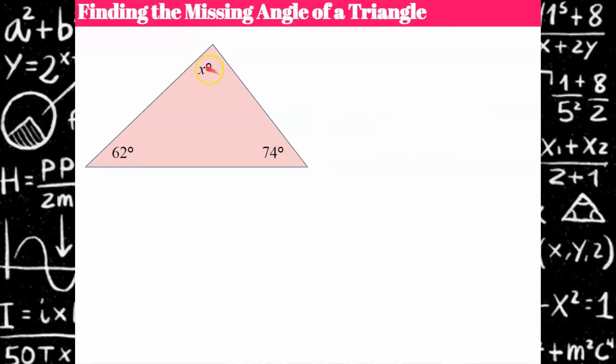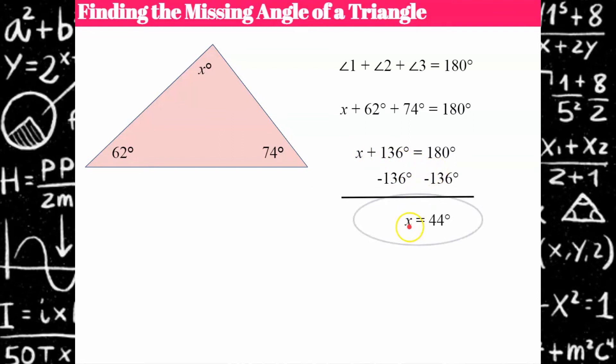So now I'd like to show you how to use this theorem to find a missing angle of a triangle. So since we know that the three angles have to have a sum of 180 degrees, I can use this to write an equation. So x plus 62 plus 74 in any order, the order doesn't matter, will have a sum of 180 degrees. So we're going to combine like terms, 62 plus 74 is 136, and to solve for x, we're going to do the inverse of add 136 and subtract 136 from both sides, giving me the answer that x is equal to 44. So this third missing angle measurement of this triangle is 44 degrees.